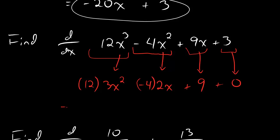Alright, and then we simplify. Twelve times three is 36. Minus four times two is minus eight. And then plus nine. And that's it, people. Ain't no thing, you know what I'm saying.